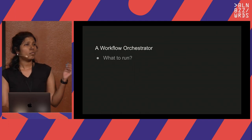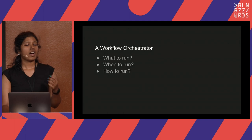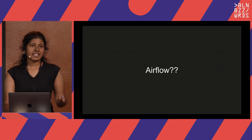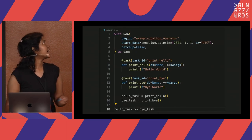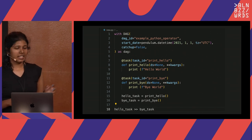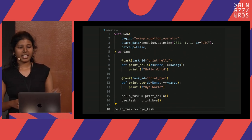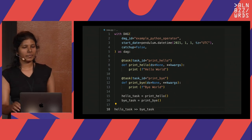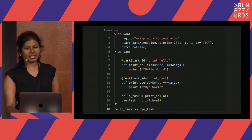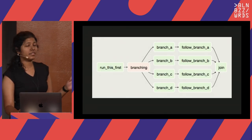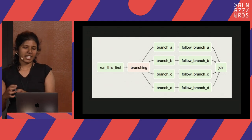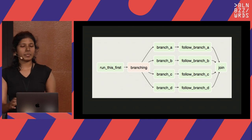Airflow is an orchestrator to which you can say what to run, when to run, how to run, and what happens as a result. It is all Python-based — you define a DAG, tell it what your tasks are, and how to combine them as a workflow. You can do branches and decision logic based on a particular output. It can get crazy.